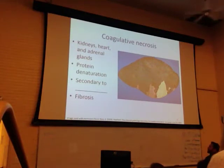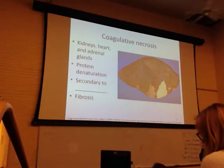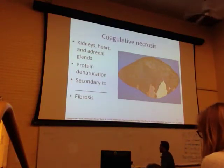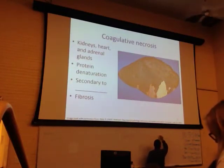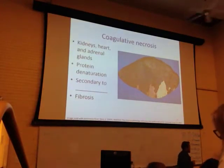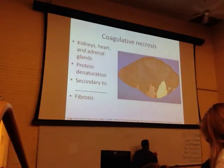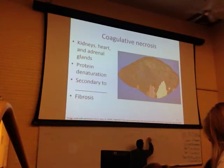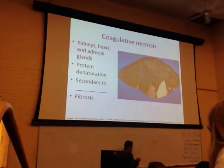Kidneys, heart, and adrenal glands — tissues that have a tree-branch-like vascular architecture. Where the blood vessel comes in and branches off: if you create a blockage of blood at one location, you're going to get a wedge-shaped area of necrosis where those blood vessels would have perfused. This is called coagulative necrosis and is typically secondary to acute ischemia, where you've reduced blood flow to the area.